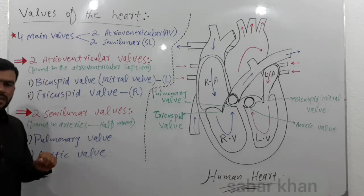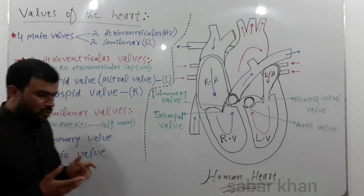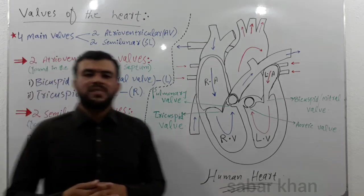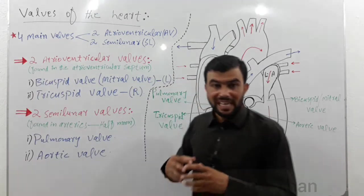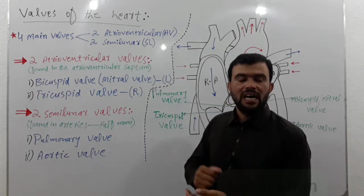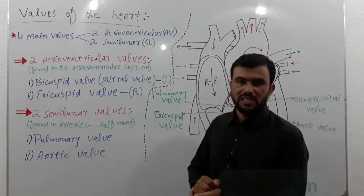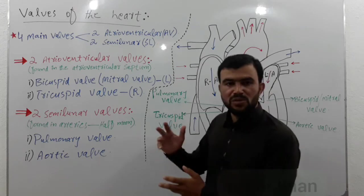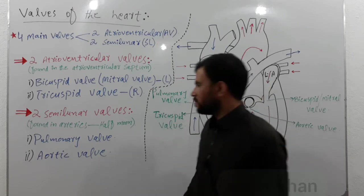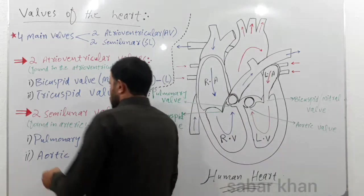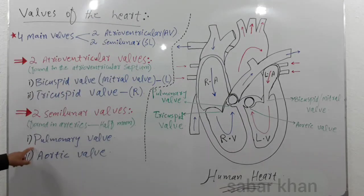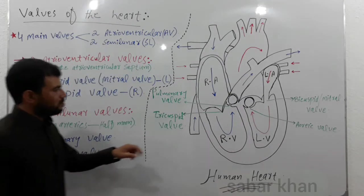Now we come towards the two semilunar walls. Semilunar walls are called semilunar walls because they are shaped like a half moon — semi means half. The first semilunar wall is the pulmonary valve.